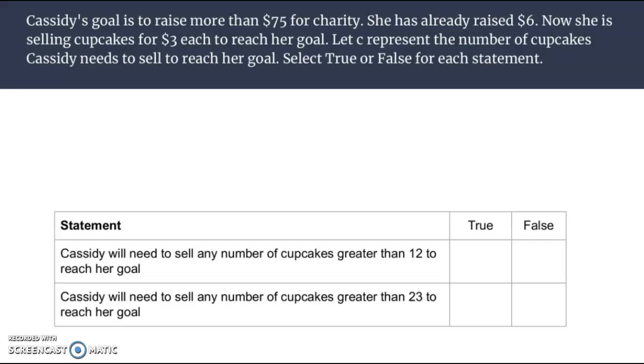Next one we're going to set up and solve, but then we'll answer a couple of statements and say whether those statements are true or false. Cassidy's goal is to raise more than $75 for charity. We can stop right there. More than $75, greater than $75. Already raised $6. Selling cupcakes for $3 each. C represents the number of cupcakes. 3C.